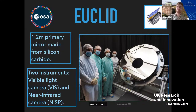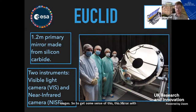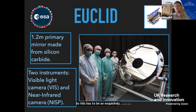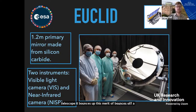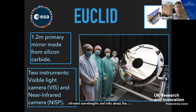This mirror has to be exceptionally smooth — the image quality needed from this telescope has to be exquisite. The mirror has to be polished and polished and polished; any imperfections can spoil the quality of those images. To get some sense of this: if this mirror were the size of France, any bump bigger than one and a half centimeters would ruin the imaging quality. The light bounces from this mirror through a couple of other mirrors and gets split into two wavelengths — visible and near infrared — focused on two cameras. One will give beautiful pictures of galaxies at optical wavelengths, and the other will give near infrared data about the stars living in these galaxies.